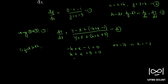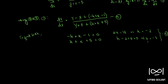Substituting k equal to minus 2 into the second equation, we get h plus (minus 2) plus 5 equal to 0, which gives h equal to minus 3. Let's call this equation 5. We can now write capital X equal to small x minus h, which is x plus 3, and capital Y equal to small y minus k, which is y plus 2.